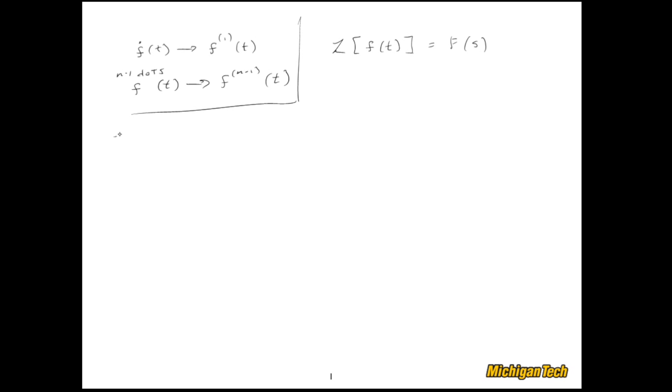Now, if I want to take the Laplace Transform of df/dt, what I get is s times F of s minus an initial condition, f0, little f of 0. And I can keep going with this. If I wanted to take the second derivative of f, I just get this: s squared times capital F minus s f0 minus another initial condition, f dot 0.